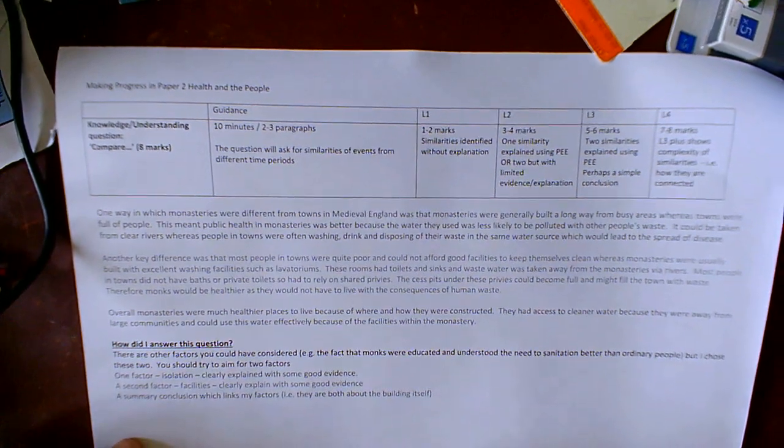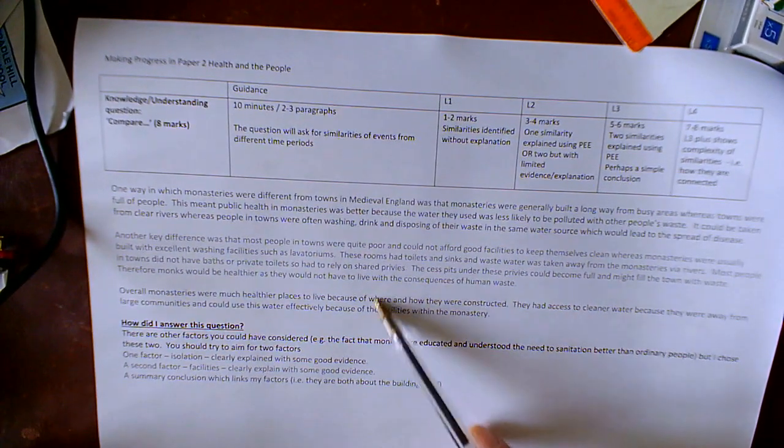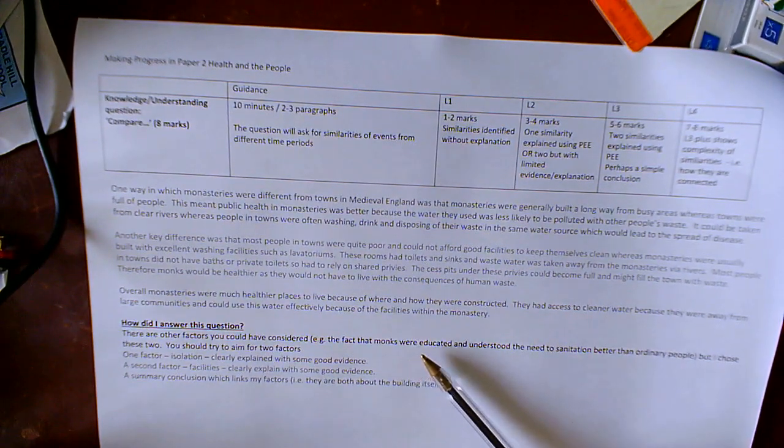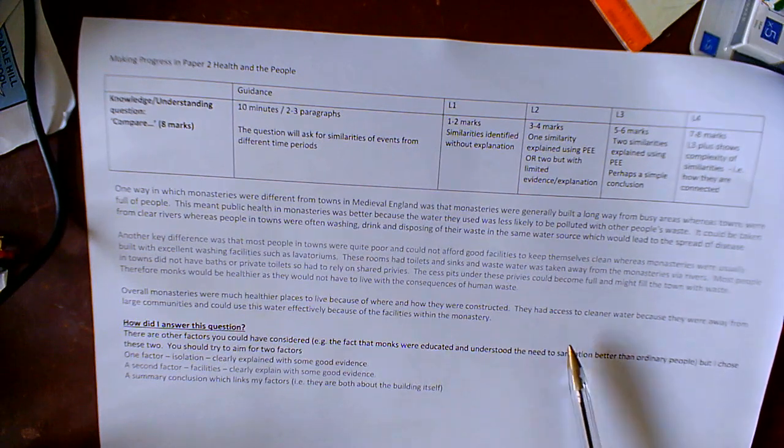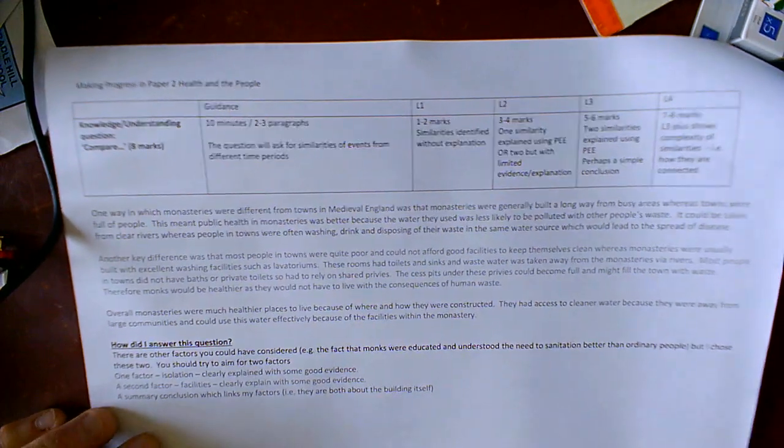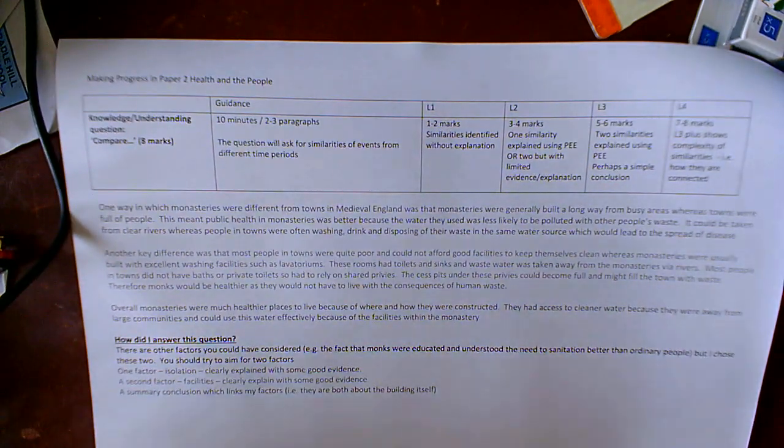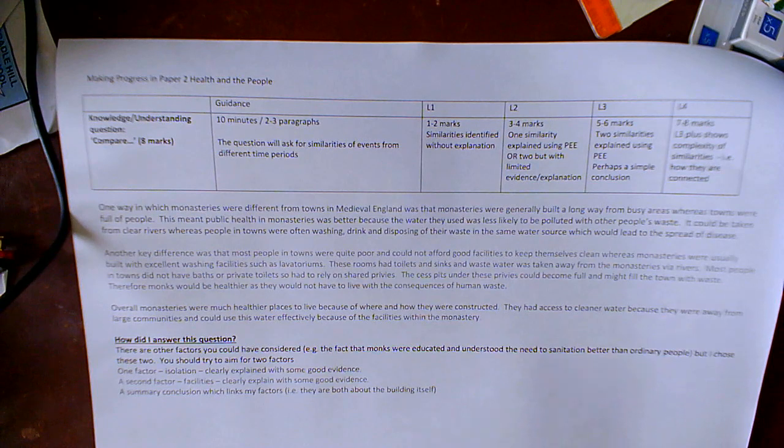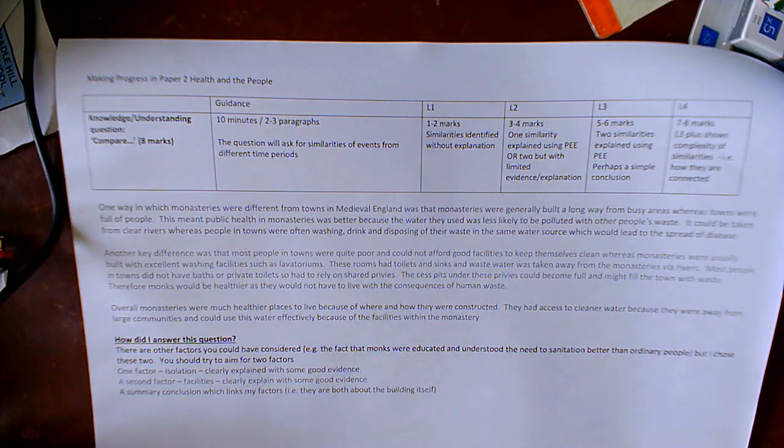Now there are lots of other things you could have talked about. For example, you could have talked about the fact that monks were better educated in monasteries whereas most people in the town weren't so they had less idea about sanitation. So you don't have to talk about the things I talked about but the principle is two factors if possible, some sort of summary paragraph at the end if you can. Okay, well done for those who sent me that. Thank you very much.